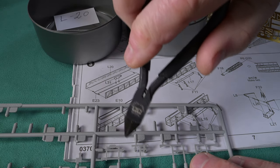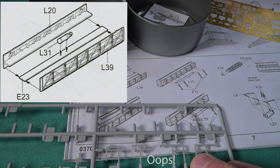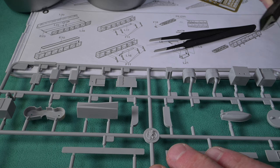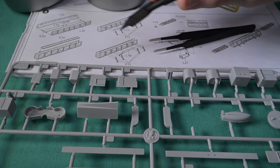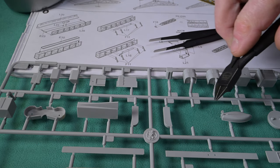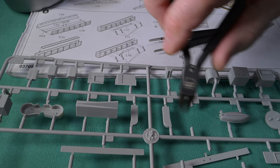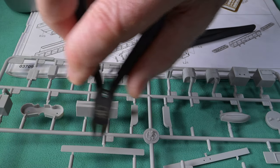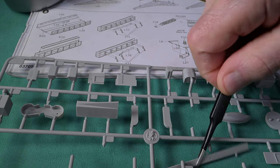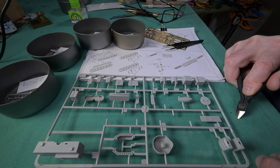Here we go with the E sprue. We need E10 and E23 and they're pretty obvious here. They're so different in length I don't think we need to worry about having to make separate tins.